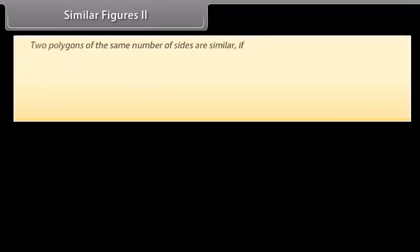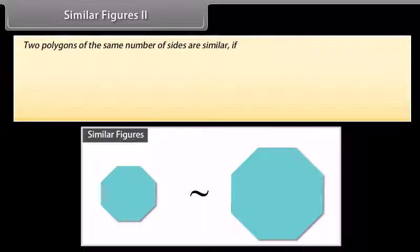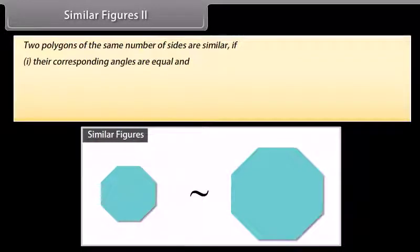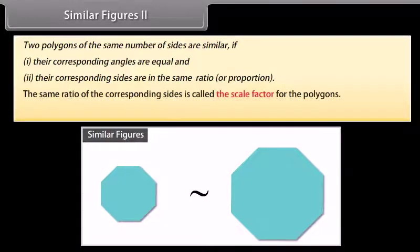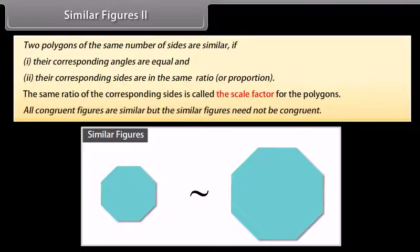Two similar figures: two polygons of the same number of sides are similar if, one, their corresponding angles are equal, and two, their corresponding sides are in the same ratio or proportion. The same ratio of the corresponding sides is called the scale factor for the polygons. All congruent figures are similar but similar figures need not be congruent.